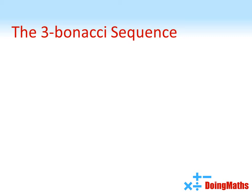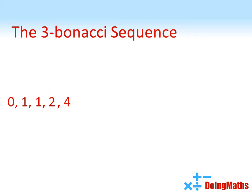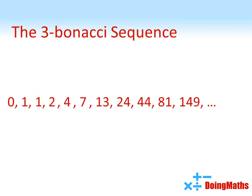Now the Tribonacci sequence is made in a very similar way. This time we're going to start with zero and two ones. Now to create this, instead of just adding two terms together, we're going to add three terms together. So we add the zero and the two ones together to give us two. To get the next term we add the two ones and the two together giving us four. We then add the one, the two, and the four together to give us seven, and so on — each term created by adding the previous three terms together.